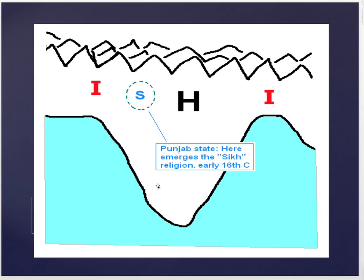Now there's another group you want to take note of. As you can see by this image, there is an Islamic wing to the northwest, a Hindu core, and an Islamic wing to the east. Between the northwestern Muslim population and the Hindu core, another religion has emerged called the Sikh religion.